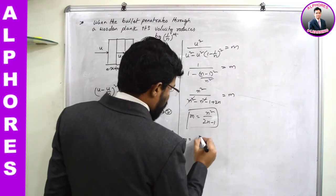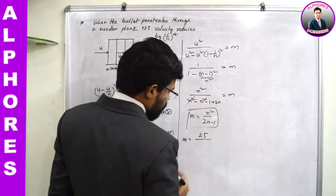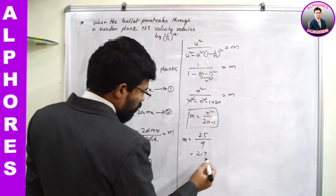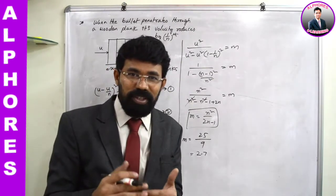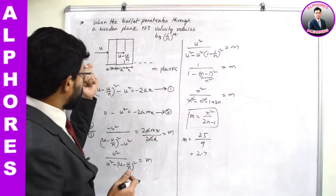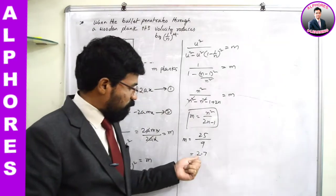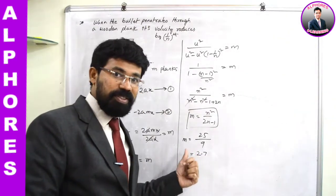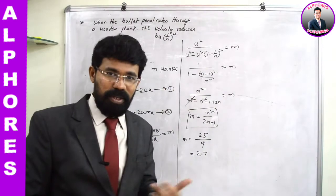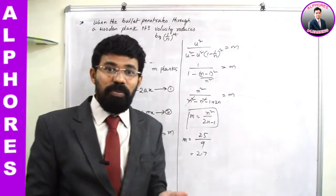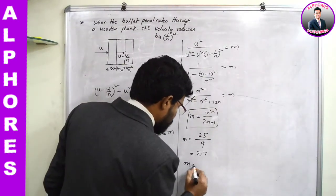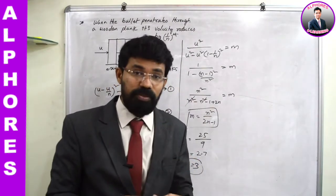When you replace n with 5: m = 5² / (2×5 - 1) = 25/9 ≈ 2.7. There won't be 0.7 of a plank — you must use planks of the same thickness. So 2.7 means the bullet crossed the second plank and got embedded in the third plank. If the question asks how many planks are required, the answer is 3.